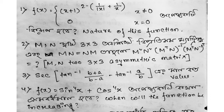The third number question: find the value of sec(tan⁻¹((b+a)/(b−a)) − tan⁻¹(a/b)). What will this value be?